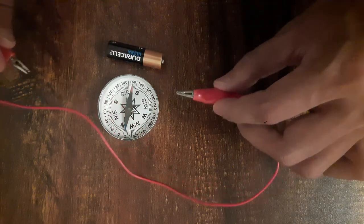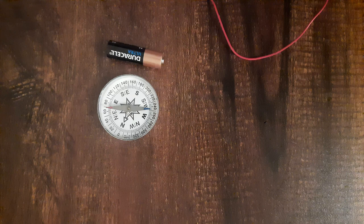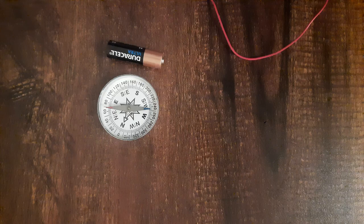Now when we remove the two ends of the wire from the two terminals of the cell, the needle comes back to its original position because now there is no current in the wire. So there is no magnetic field. The needle of the magnetic compass now aligns itself again with the Earth's magnetic field.